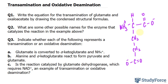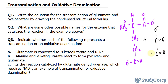Oxaloacetate looks like this. We have a carbon that is a carboxyl, bonded to another carbon that is double bonded to oxygen — so we have a ketone there — and then we have the rest of the molecule: CH2 and another carboxyl.